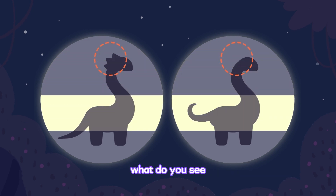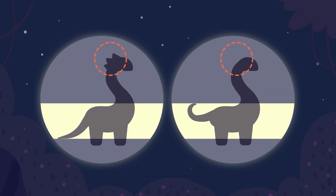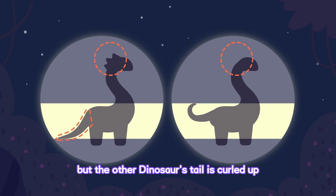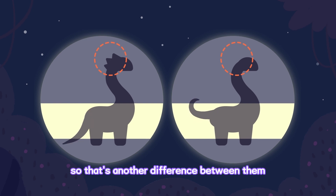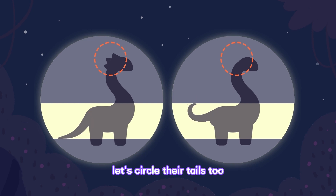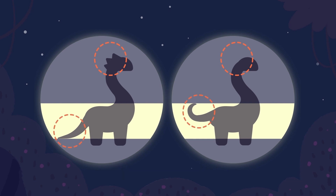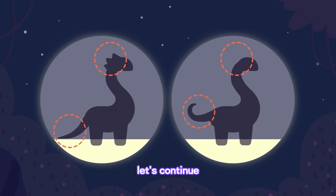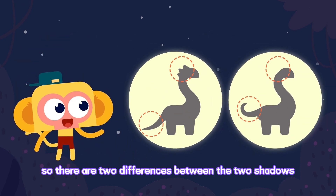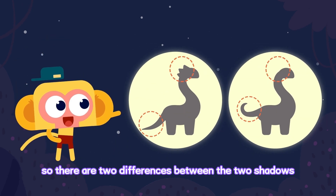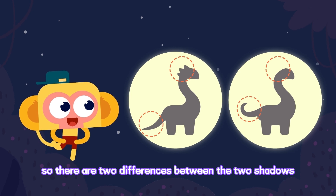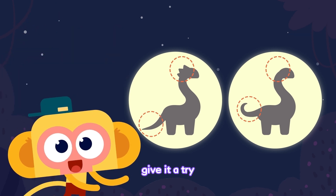All right, keep looking. What do you see? This dinosaur's tail is straight, but the other dinosaur's tail is curled up. So that's another difference between them. Let's circle their tails too. The rest of the two shadows are the same. So there are two differences between the two shadows. Give it a try.